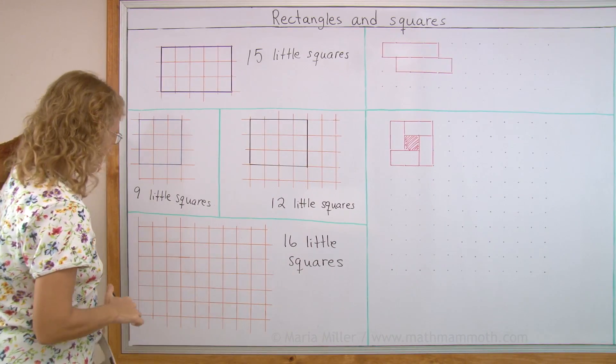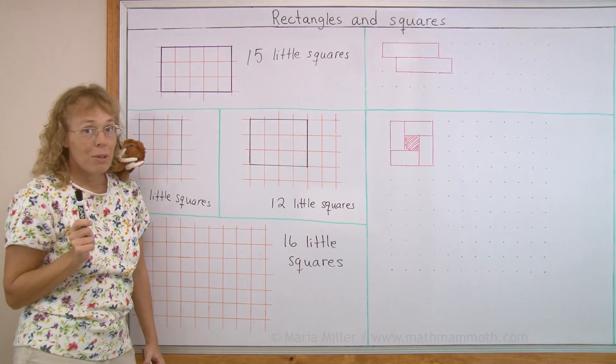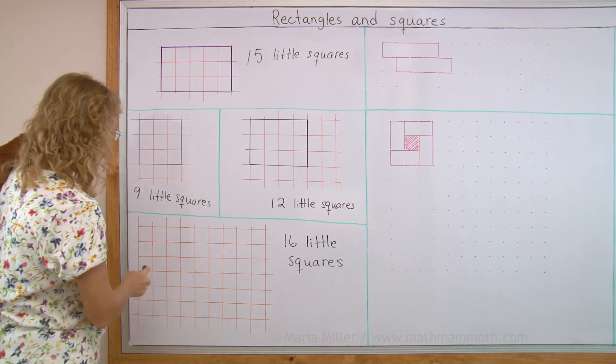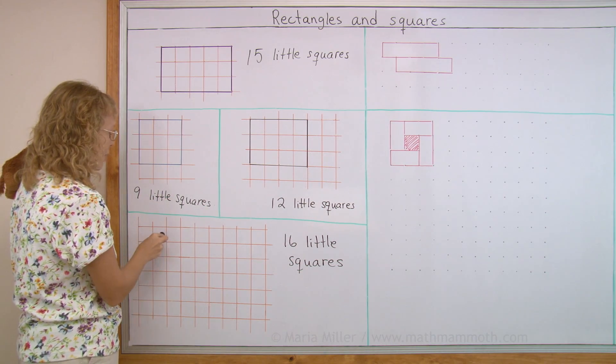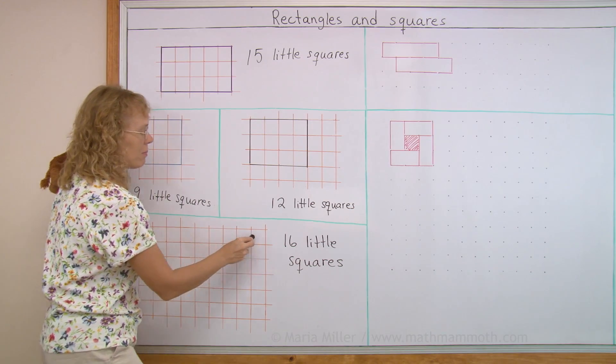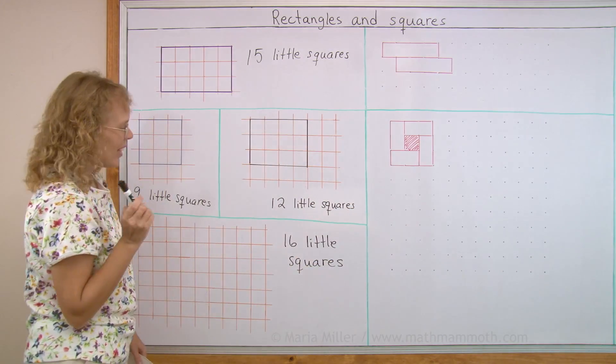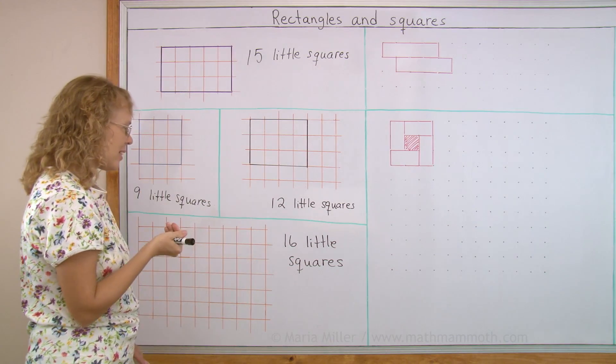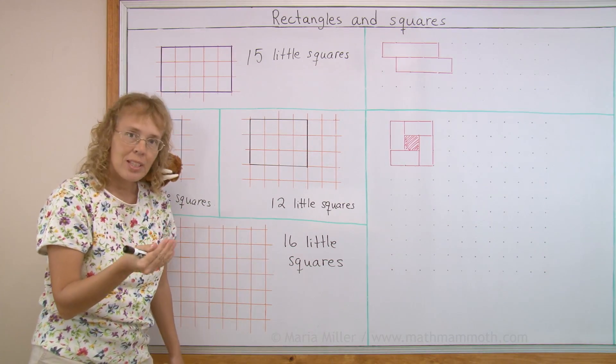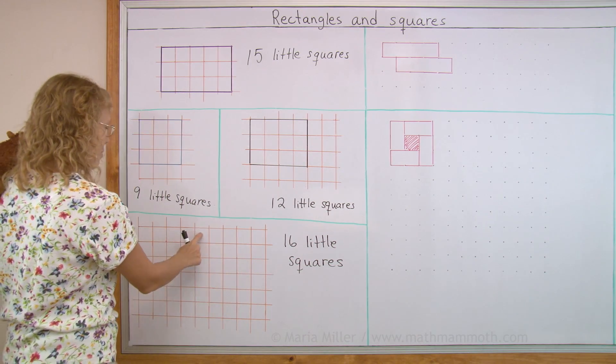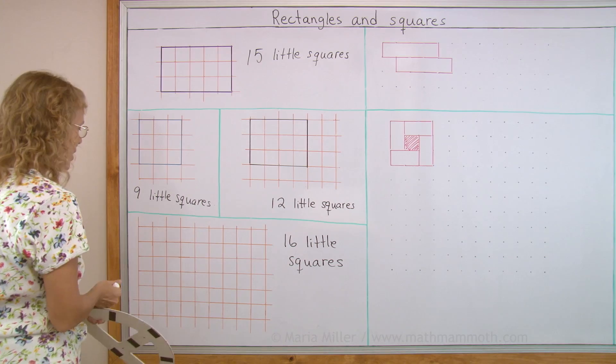16 little squares. Okay. One way I can draw a rectangle with 16 little squares inside is if I just take 16 little squares in a row. I just don't have a grid big enough to do that. And then I could think that 16 is 8 plus 8. So I could draw 8 and 8, right? 1, 2, 3, 4, 5, 6. Yes, I can do that.